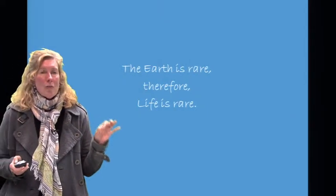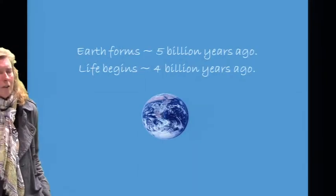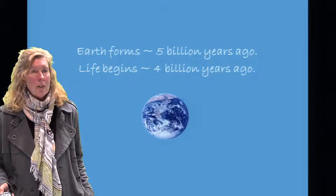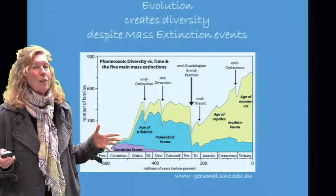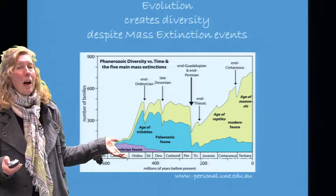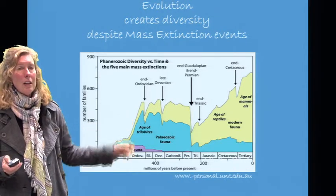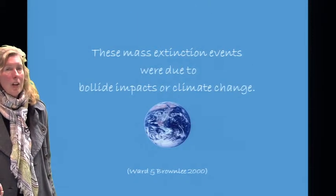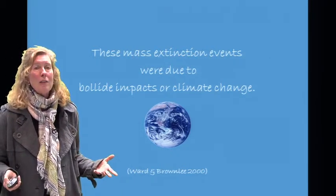The Earth is rare, therefore life is rare. The Earth formed approximately five billion years ago, and life began approximately four billion years ago. Over eons of time, we see this great diversity through evolution, despite five mass extinction events. Looking at a graph, we see the increase of diversity over time despite those troughs of mass extinction events. These mass extinction events were generally due to natural causes — bolide impacts or climate change.